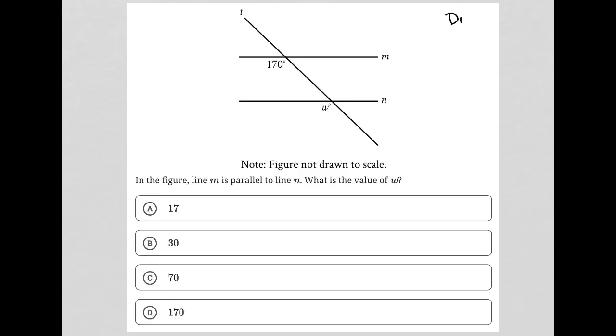This question is a diagram question. We see the visual input provided here. The question says, in the figure, line M is parallel to line N. So these two lines are parallel. What is the value of W?